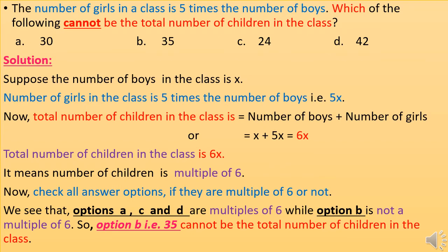The total number of children in the class is number of boys plus number of girls, so X + 5X = 6X. The total number of children is 6X, meaning it must be a multiple of 6. Checking all the answer options, options A, C, and D are multiples of 6, while option B is not. So option B, which is 35, cannot be the total number of children in the class.